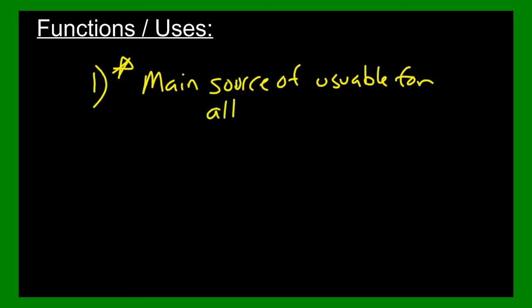What are the functions and uses of carbohydrates? Well, first and most important, carbohydrates are the main source of usable energy for all living things. Not everything uses glucose, but most things use glucose, and they use glucose to break down, it's a simple sugar, it's a monosaccharide to make energy for living things.